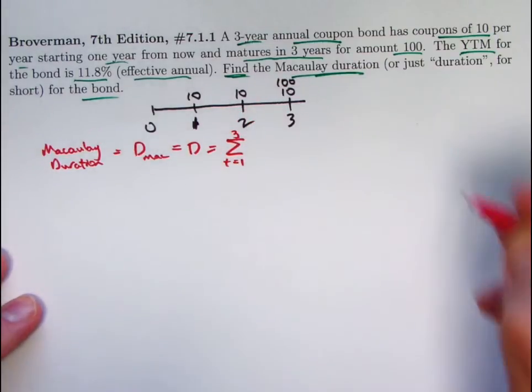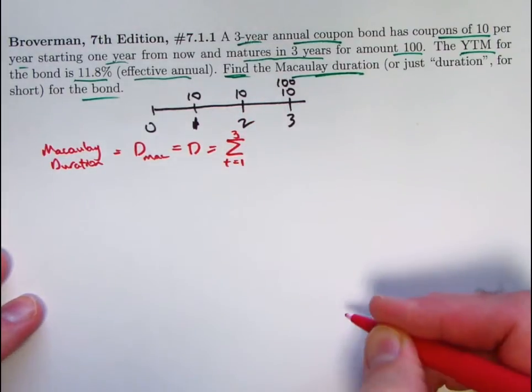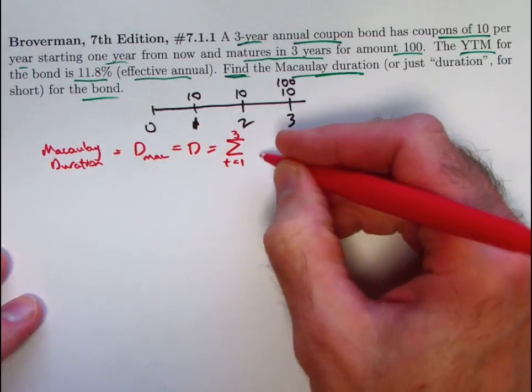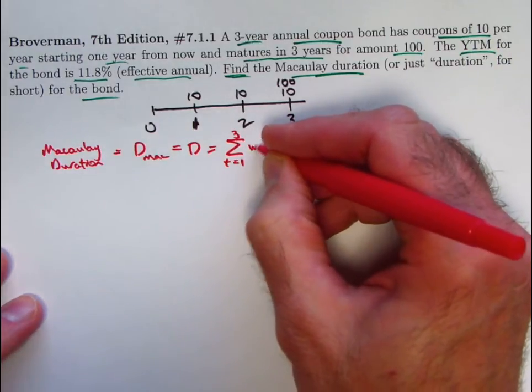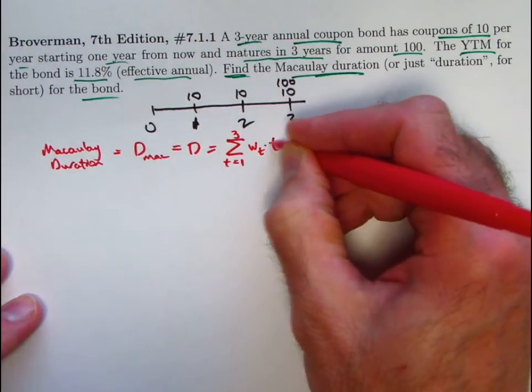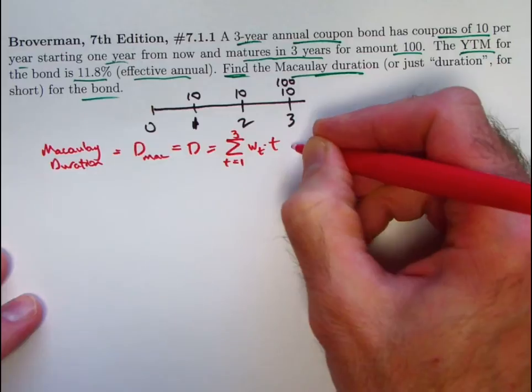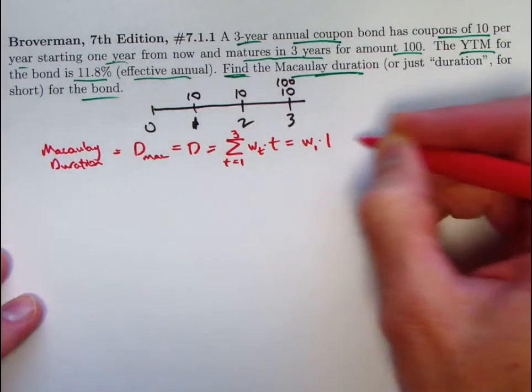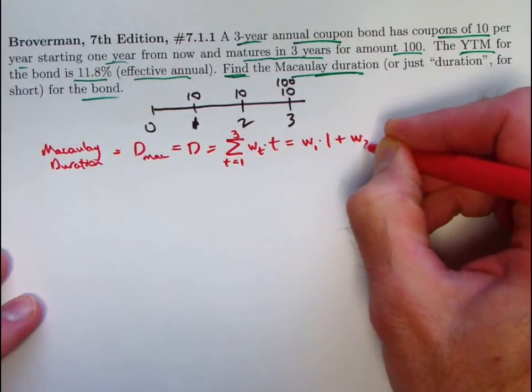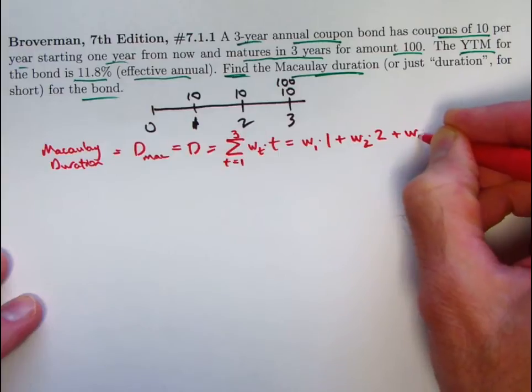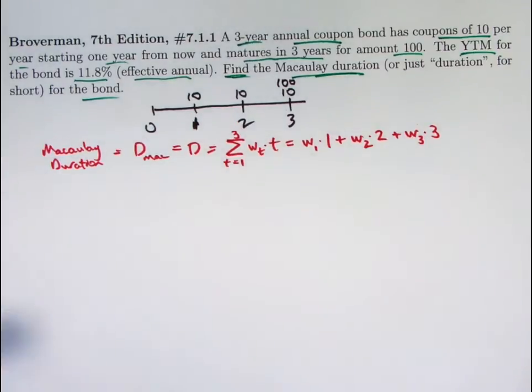In this case, T goes from one to three because we have three payments, annual payments here. Weighted averages of times. So there are going to be some weights, call them W sub T, multiplied by the times T. If you write this out without a summation, this would then be W sub one, the first weight, times time one, plus W sub two, times time two, plus W sub three, times time three.